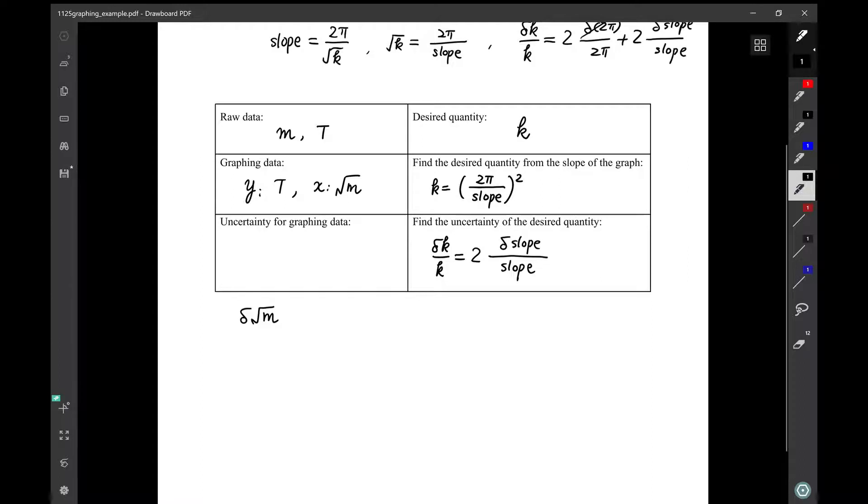One way is to use our rule number 4 in our propagation, uncertainty propagation rules. If you use this one, because it's a power to a half, so δ√m over √m is a half δm over m. But we want the absolute uncertainty. So δ√m is its relative uncertainty times √m.